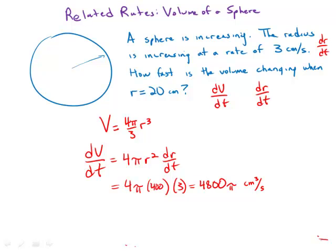4,800π centimeters cubed per second is how fast the volume of the sphere is increasing at that moment.